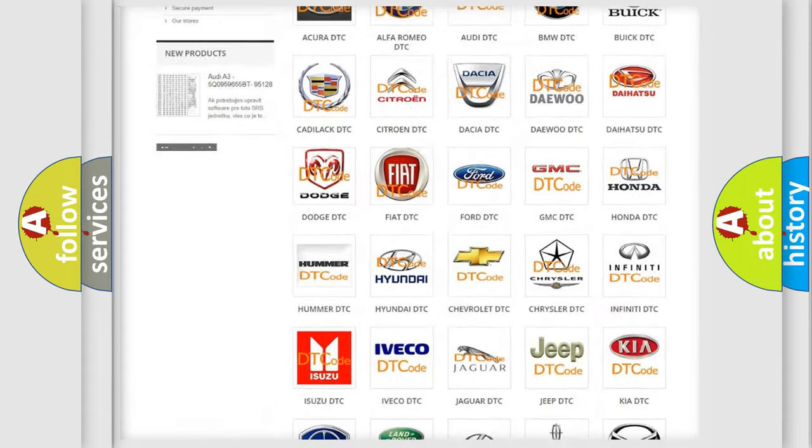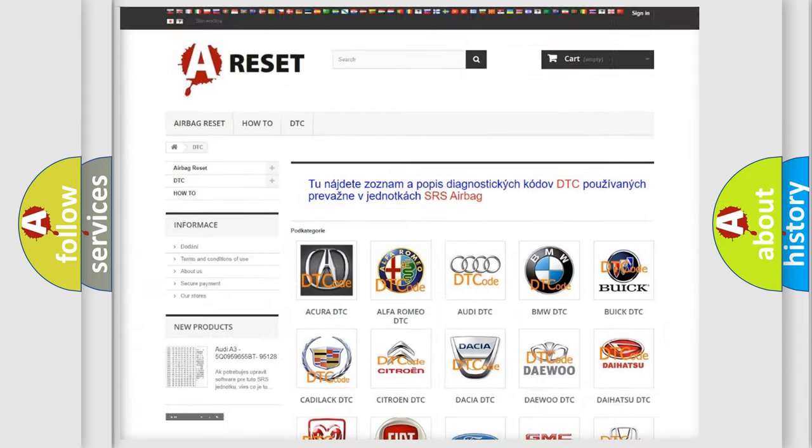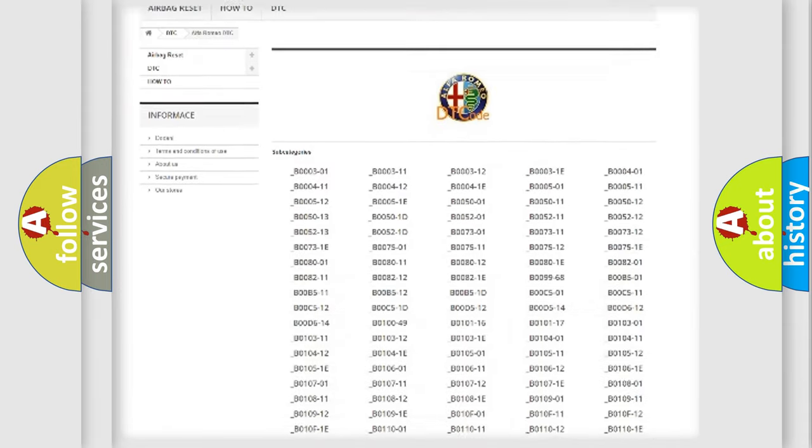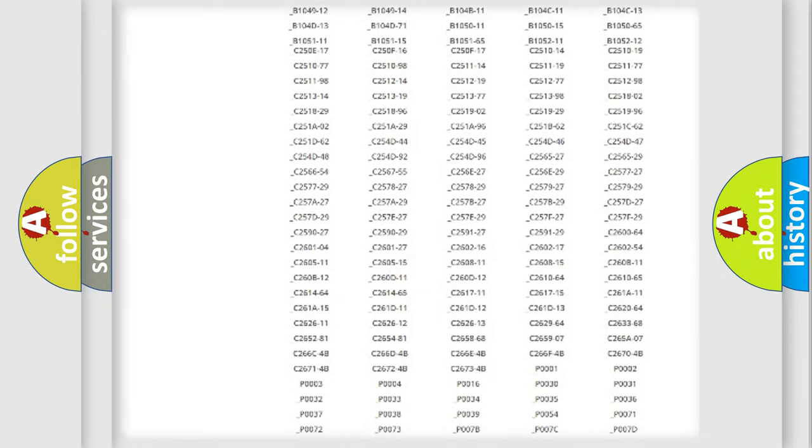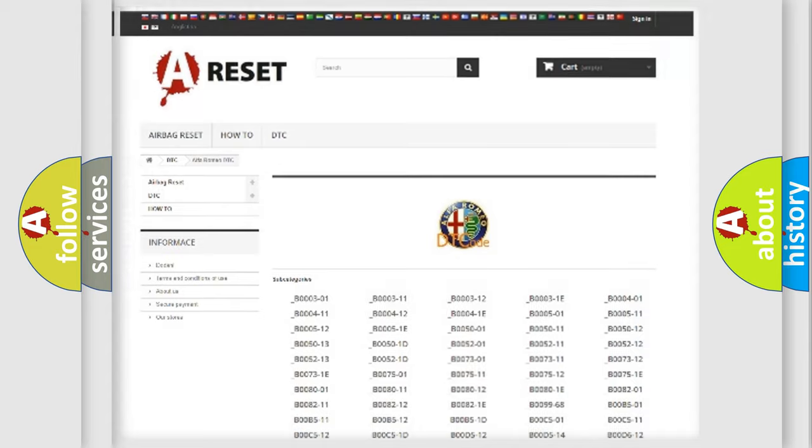Our website airbagreset.sk produces useful videos for you. You do not have to go through the OBD2 protocol anymore to know how to troubleshoot any car breakdown. You will find all the diagnostic codes that can be diagnosed in Alfa Romeo vehicles.